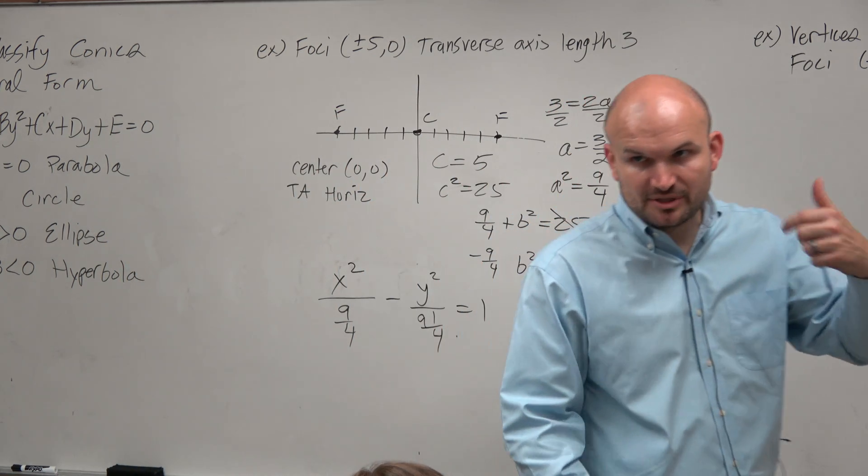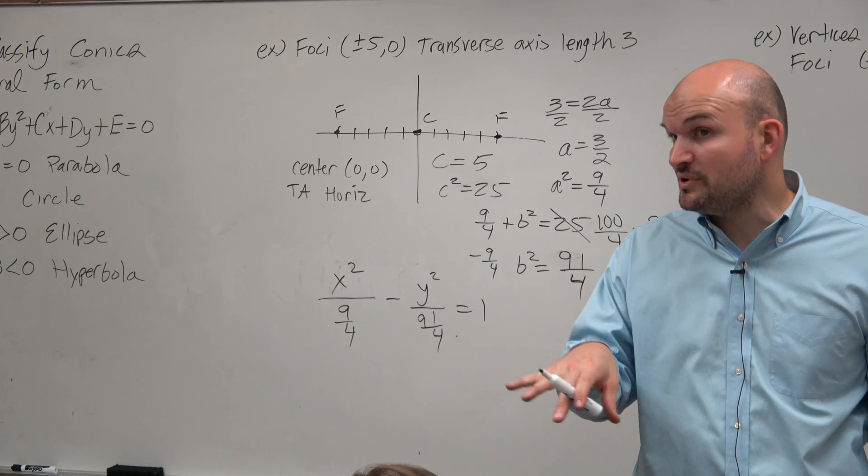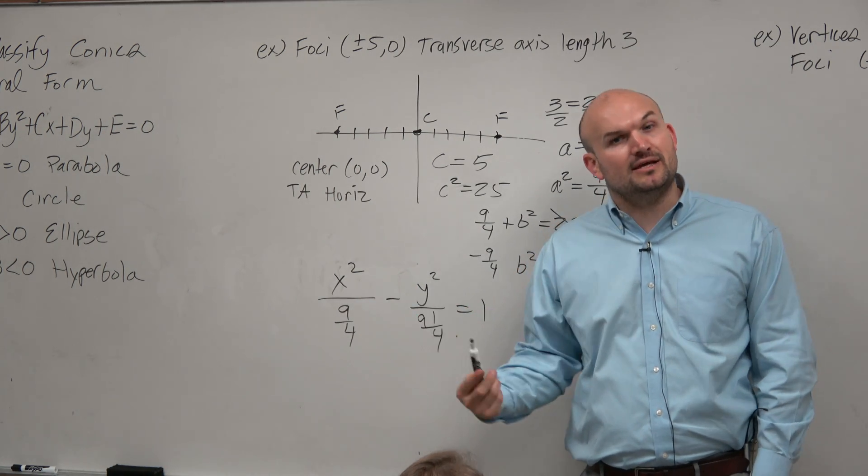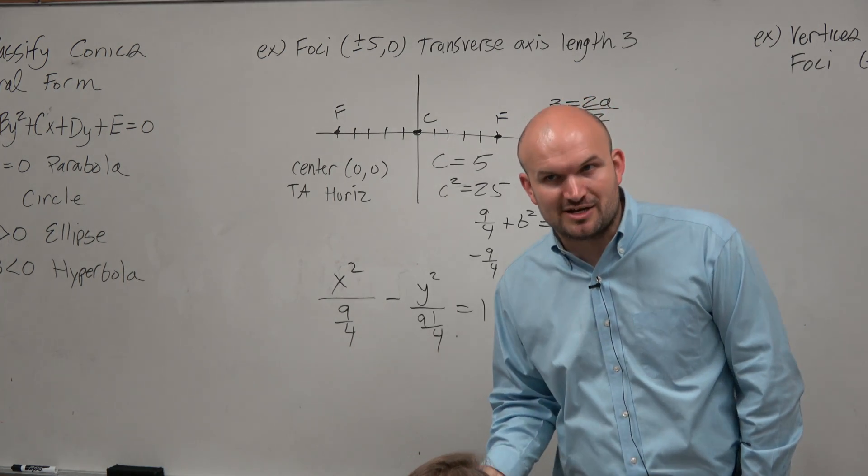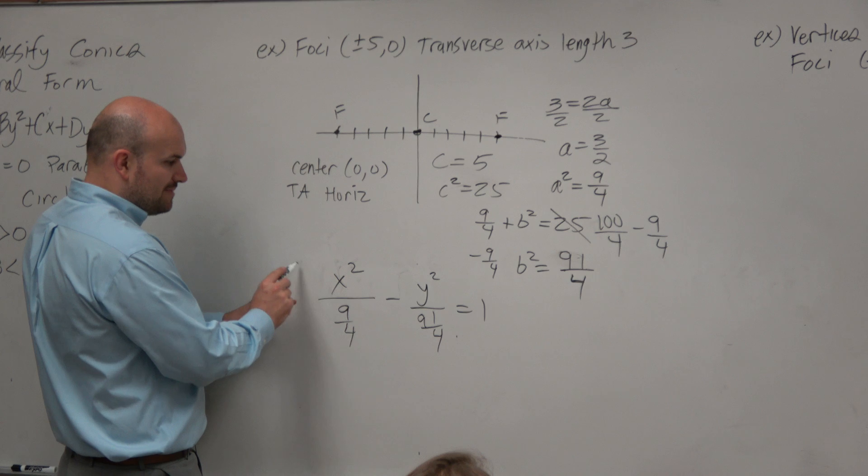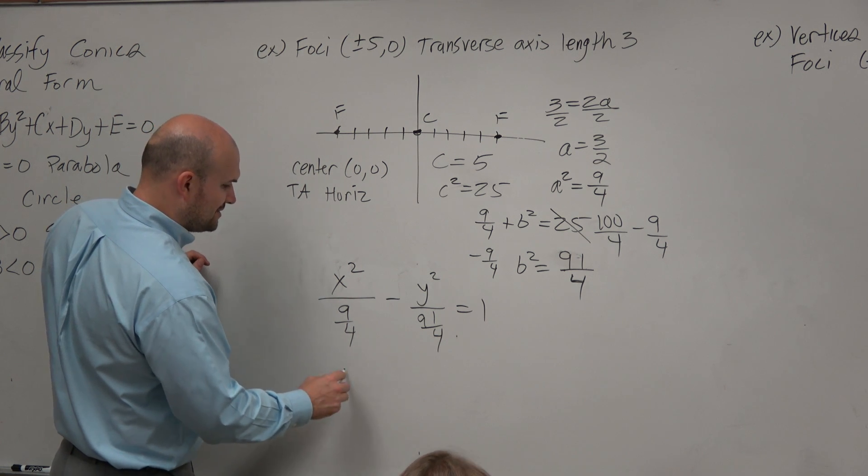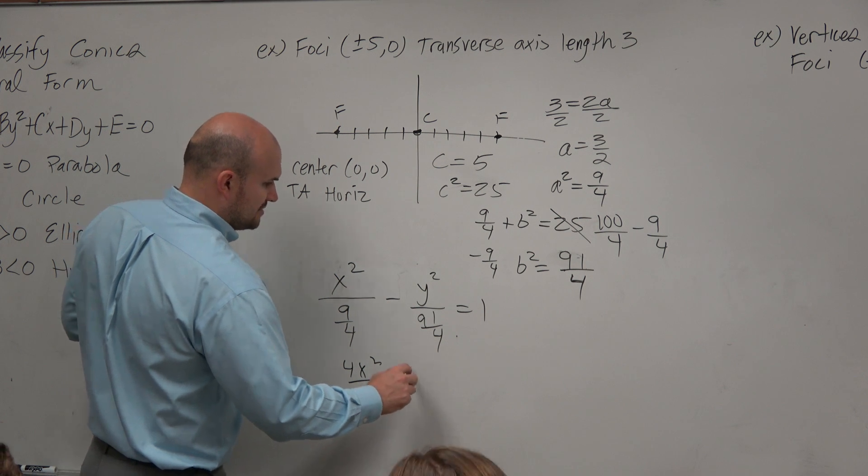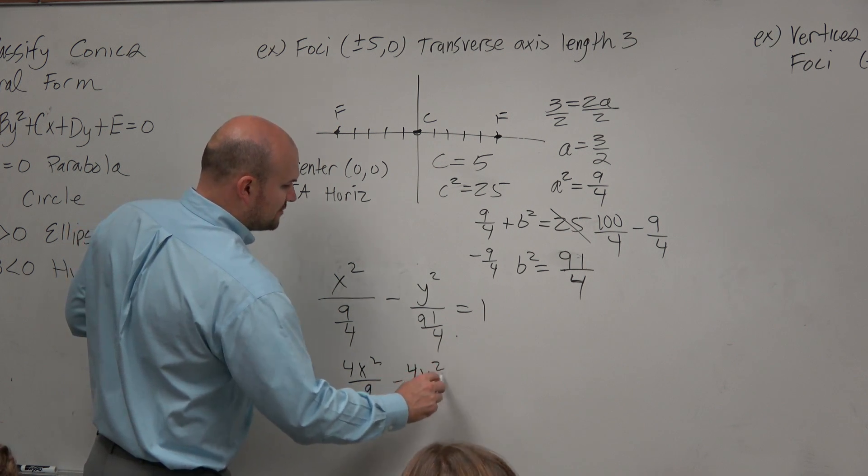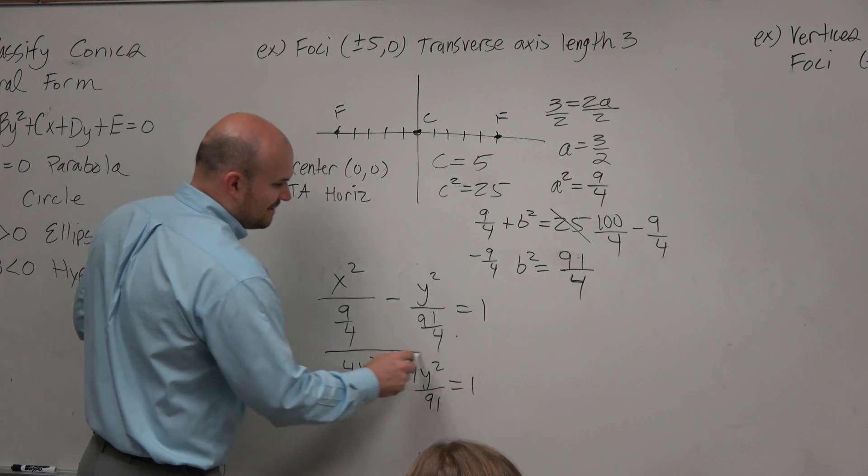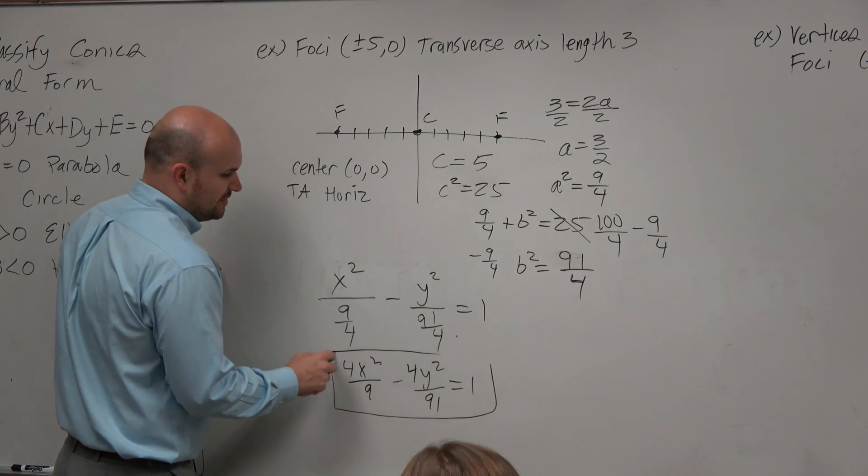Now, I can tell you that typically your problem or your answer is not going to be written like that. We don't really want to be dividing by a fraction. So we've got to think. Well, what is the same thing as dividing by a fraction? Multiplying by the reciprocal. So if I multiply by the reciprocal, I can write my answer like this. 4x squared ninths minus 4y squared 91sts equals 1. And that would be the answer that I am looking for.